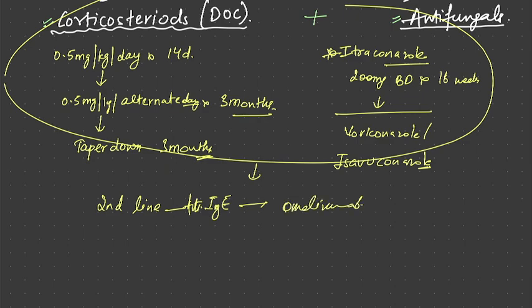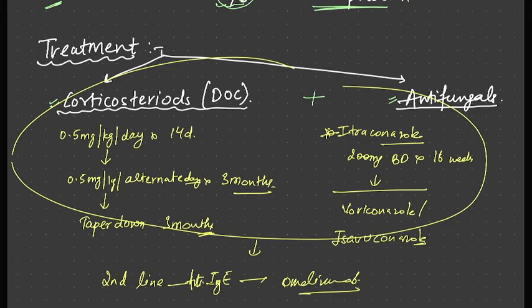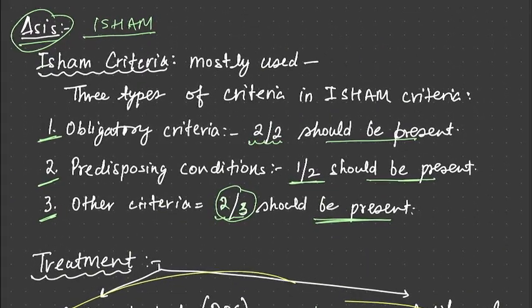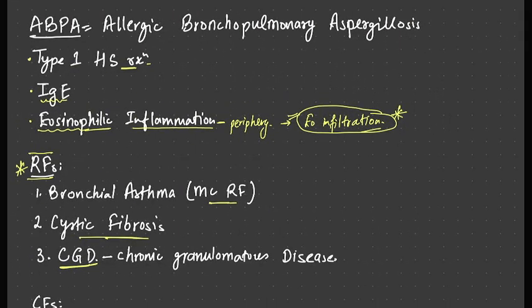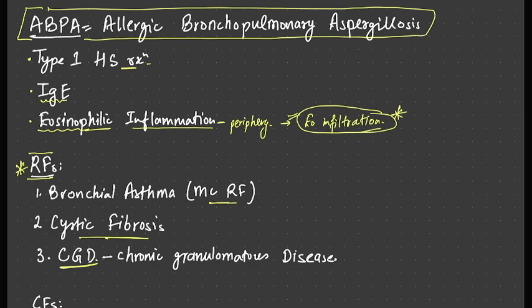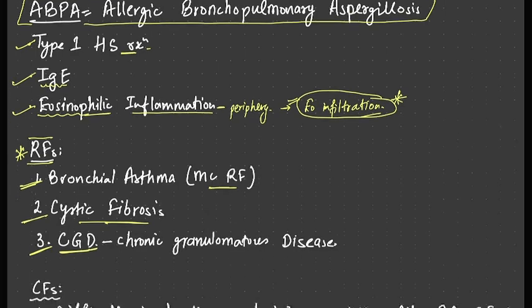So to revise: what is ABPA? Allergic bronchopulmonary aspergillosis. Fungal infection, and more precisely, allergic to fungal infection. Type one hypersensitivity reaction is there, involvement of immunoglobulin E and eosinophilic inflammation.